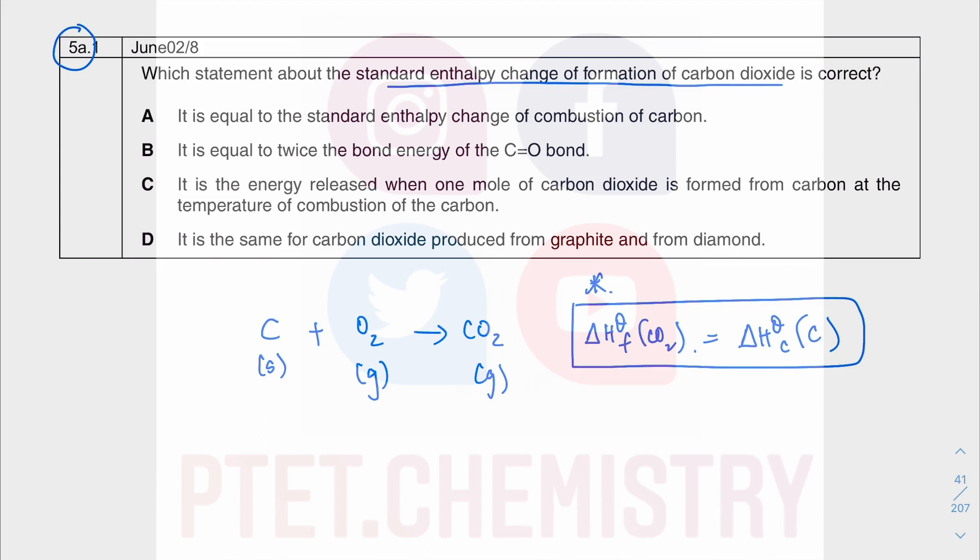So that is going to be equal to the enthalpy change of combustion of carbon. That is one of the few identities you need to keep an eye out for based on just writing a series of equations, which you will have done when you first started learning about chemical energetics. So A is the correct option there.